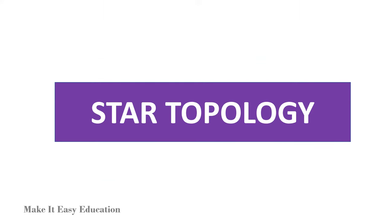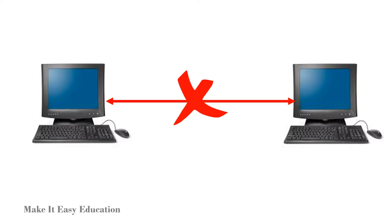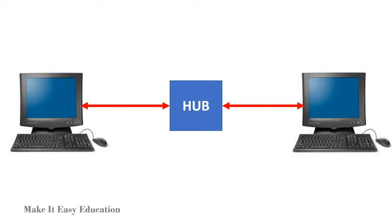Star topology. In star topology, each device in the network is connected to a central device called a hub. The devices can't communicate directly; they can communicate with other devices through the hub.